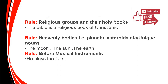Before religious groups and religious books, the definite article 'the' will be used — for example, the Bible, the Bhagavad Gita. Similarly, before heavenly bodies and before musical instruments, 'the' is to be used: the sun, the earth, the flute, the piano, the guitar.